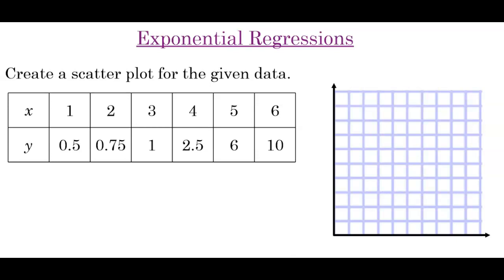So our first example: create a scatter plot for the given data. We have six data points to plot. We have x and y, scaling by 1. So (1, 0.5), (2, 0.75), (3, 1), (4, 2.5), (5, 6), and (6, 10). By looking at the scatter plot, the relationship between these data points is definitely more exponential than it is linear.